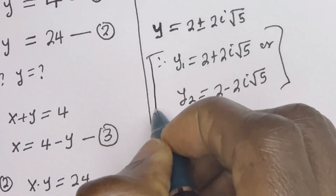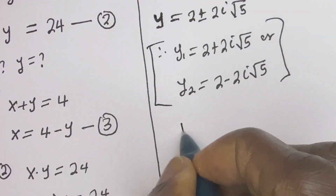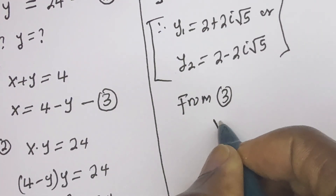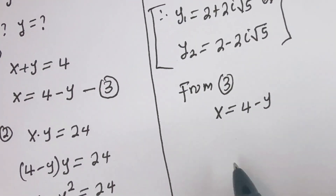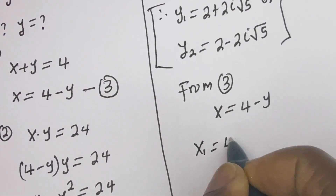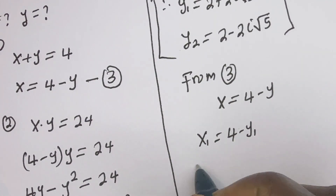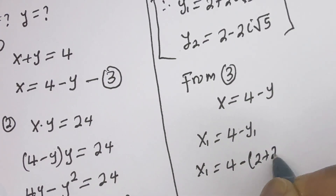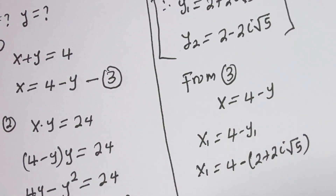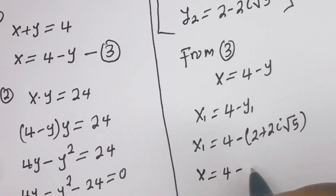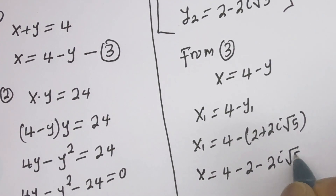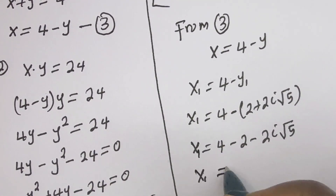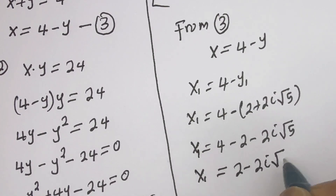We've gotten the value of y. Then let's solve for s using equation 3. From equation 3, s is equal to 4 minus y. Therefore, x1 is equal to 4 minus y1. Then x1 is equal to 4 minus, when y1 is 2 plus 2i root 5, so x1 is equal to 4 minus 2 minus 2i root 5, which gives x1 is equal to 2 minus 2i root 5.